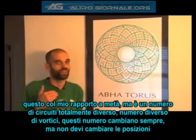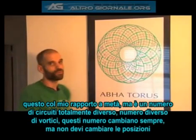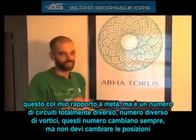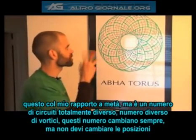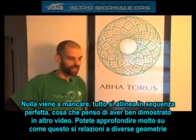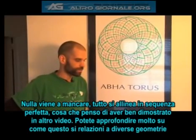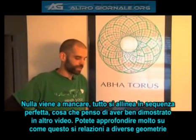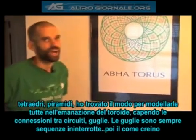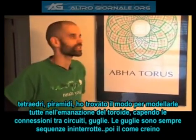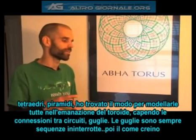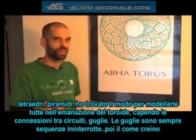With my ratio being half, it's a totally different number of circuits and a totally different number of vortices — those numbers are always changing. But you never have to shift anything's position, you don't ever have to change or fudge or account for anything that's missing. They always line up in a perfect sequence, which I clearly demonstrated in my other video. There's a lot more you can go into in terms of how this relates to various geometries — tetrahedrons, pyramids. I found the way you can model all of it through the emanations of the torus, and my spires are always unbroken sequences too.